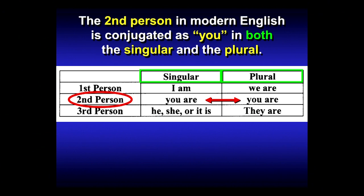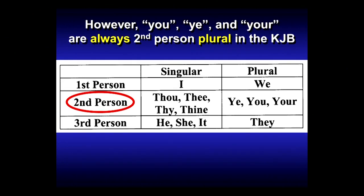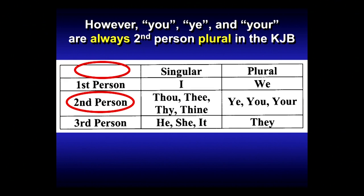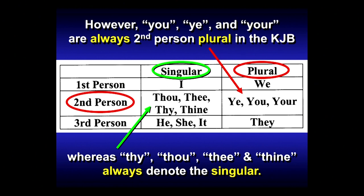When 'you' is given in a modern translation, you don't know if it's to be understood as singular or plural. All the Y words — ye, you, your — are always, always second person plural in the King James Bible. Always. No exceptions. And thou, thy, thee, thine always denote the singular. That is easy to remember: Y words are plural, T words are singular.